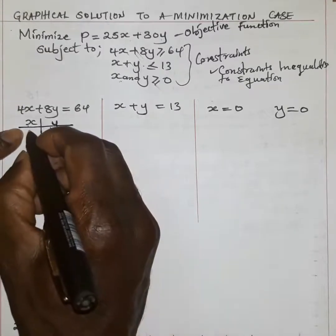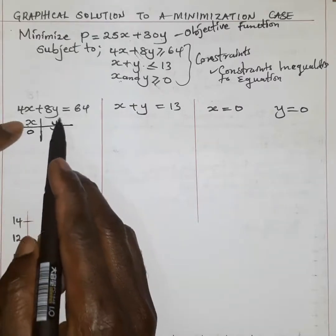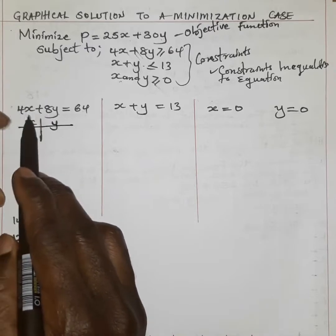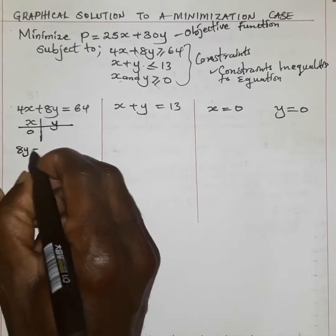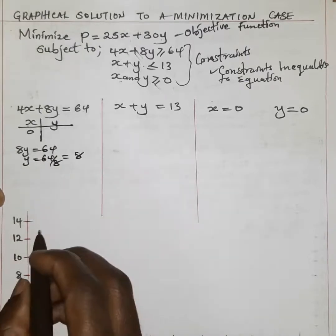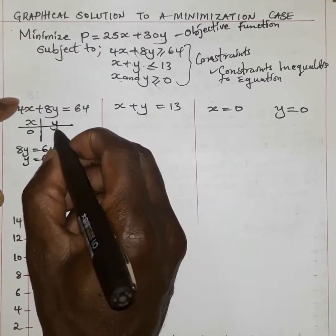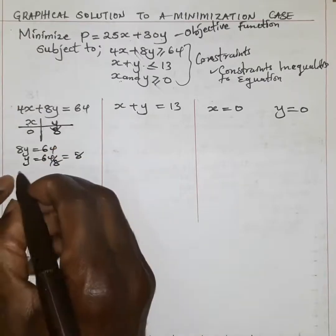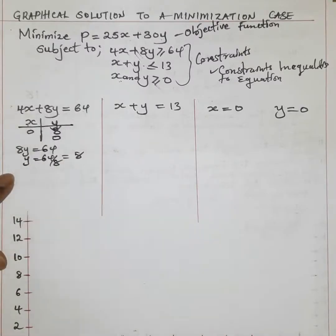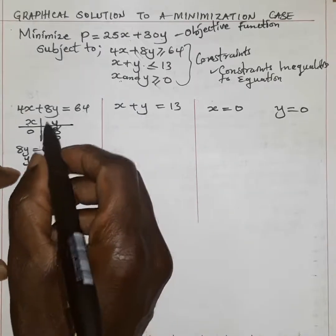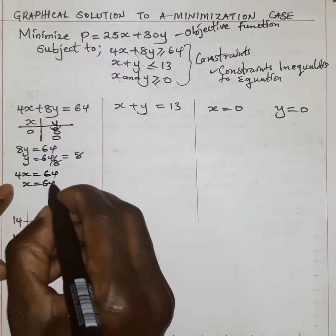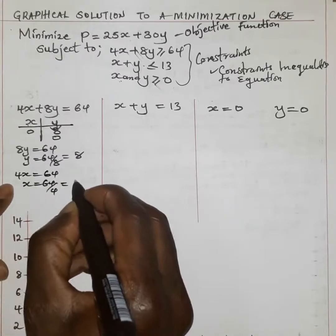For example, if X is 0 in the first equation, this term will be rounded off to 0, so we have 8Y equal to 64. Y equals 64 divided by 8, which gives us 8. So Y is 8 when X is 0. When Y is 0, we have 4X equal to 64, so X equals 64 divided by 4, which gives us 16.